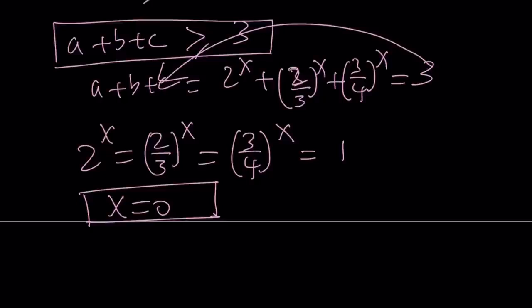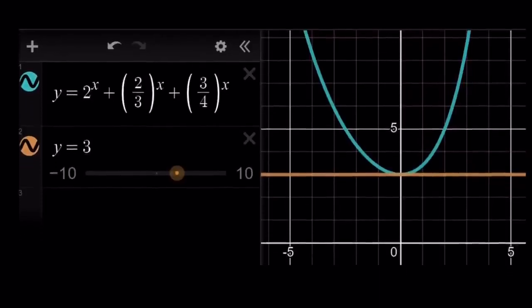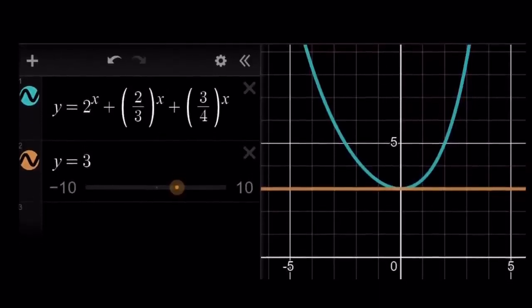To keep a long story short, this has only one solution. Let's take a look at the graph of this function. This is a very interesting function because 2 to the power x is an increasing function, but 2 thirds and 3 fourths gives us decreasing exponential functions. So their sum is kind of like a mixture of three things.